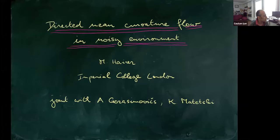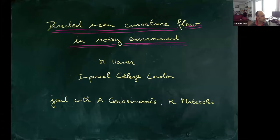It's a pleasure to introduce Martin Hairer. Martin, as you know, is a professor at Imperial College, and before that he was at Warwick, and previously he was at the Courant Institute. He mainly works on stochastic dynamics, analysis of stochastic PDEs, and he's received numerous awards, including the Fields Medal, the Breakthrough Prize, and the Fermat Prize. Please, go ahead.